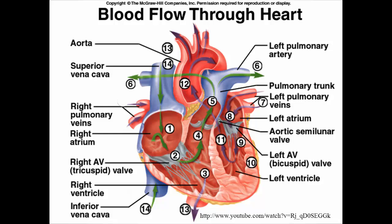Oxygenated blood comes back from the lungs via the pulmonary veins — either the right or left pulmonary veins — and dumps into the left atrium. From the left atrium, it passes through the bicuspid valve into the left ventricle. From the left ventricle, it's pumped beneath the pulmonary trunk into the aorta through the aortic semilunar valve, then out to the body — the head, arms, trunk, and legs. As blood returns, it enters through the inferior or superior vena cava back into the right atrium, and the cycle repeats.